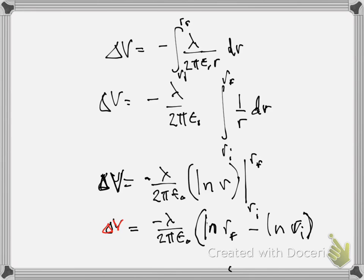Not even a line of positive charge — it's a line of charge with charge density lambda. So if lambda is negative, then it's a line of negative charge. What we found is that as we go from some initial radius to some final radius, the change in potential is minus lambda over 2 pi epsilon-zero. The integral ended up being the natural log.